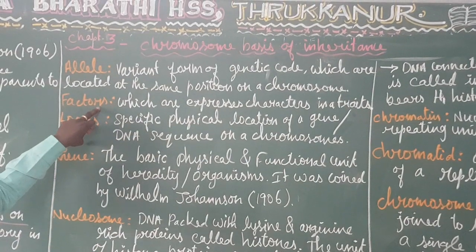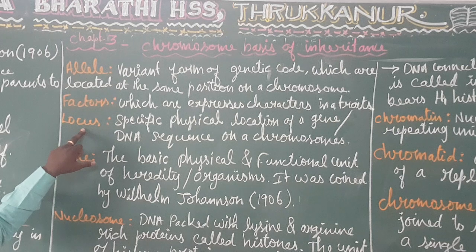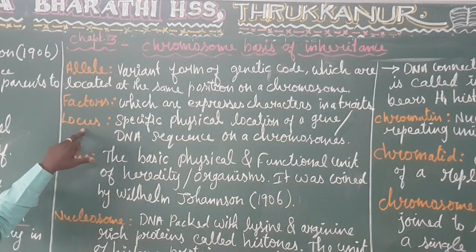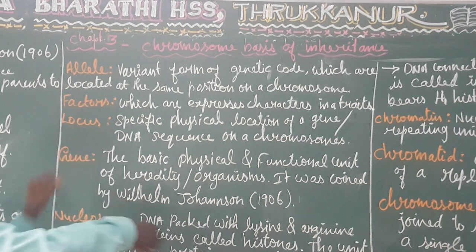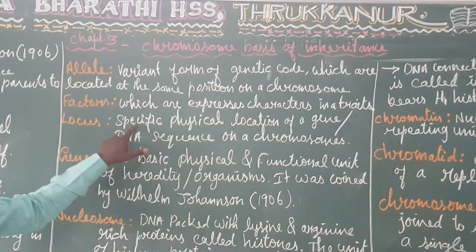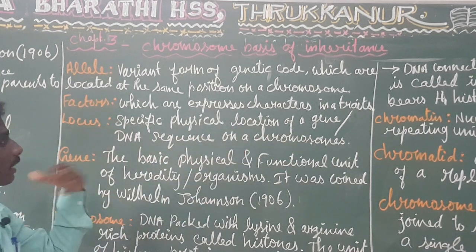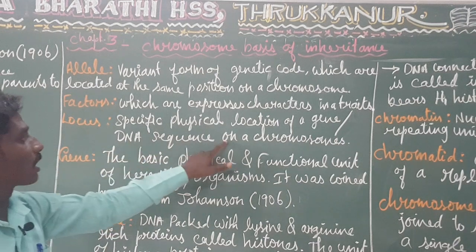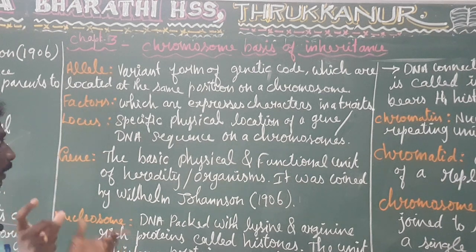Genes represent the locus. If you are a gene, your locus is where you are living — your home. That location on the chromosome is the locus. Locus is the specific physical location of a gene — a DNA sequence on a chromosome. The particular place on the chromosome where the gene is found is its locus.